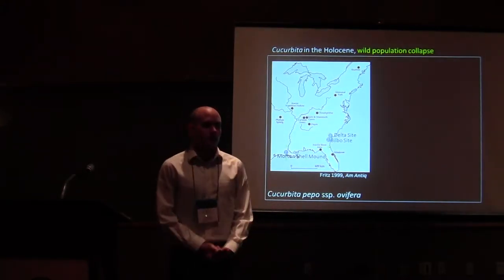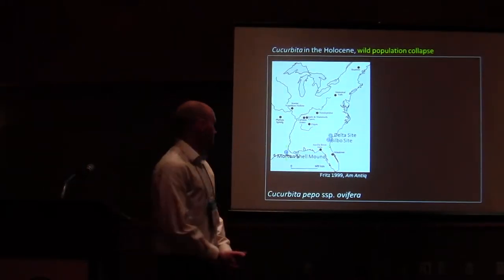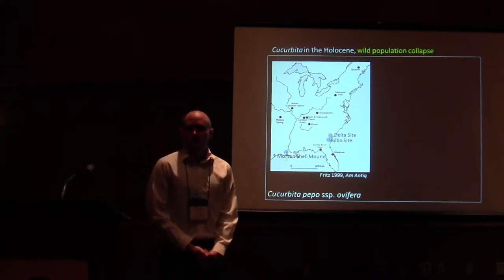So wild populations of cucurbita seem like they have probably declined in the Holocene. This is a map compiled by Gayle Fritz.